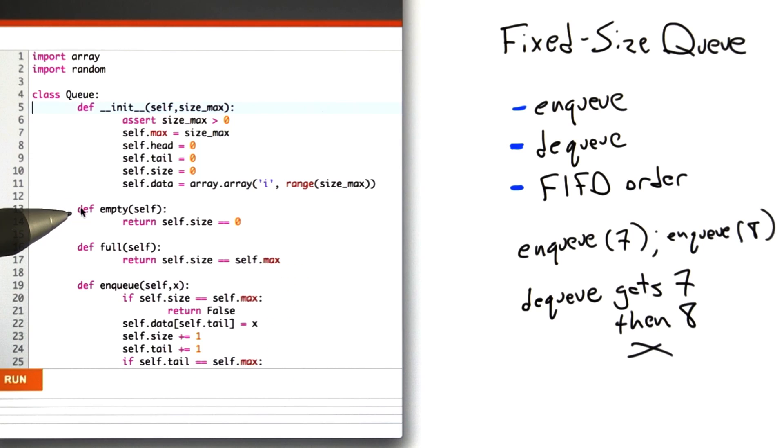The first method the queue supports is the empty method, which simply returns true if self.size equals 0. The empty queue is the one that currently contains 0 elements. Very similarly, the full queue method returns true if the current size of the queue equals the maximum size.